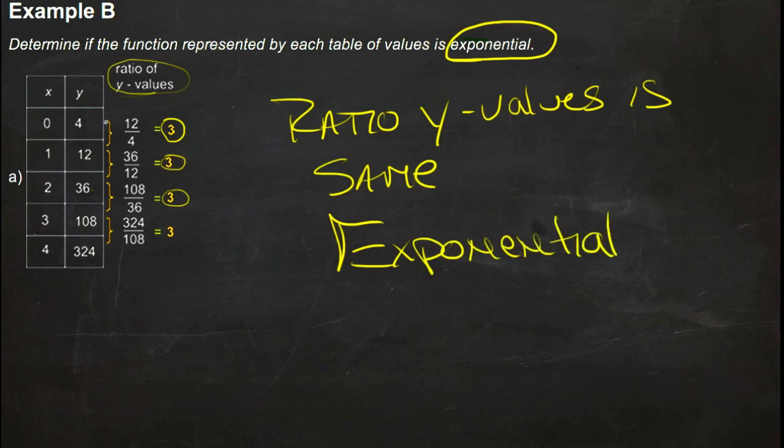So to check that out, just see how you get from one number to the other. If you multiply here, and you multiply by the same thing here, and you multiply by the same thing here, and so on, as long as that keeps happening, then you have an exponential model.